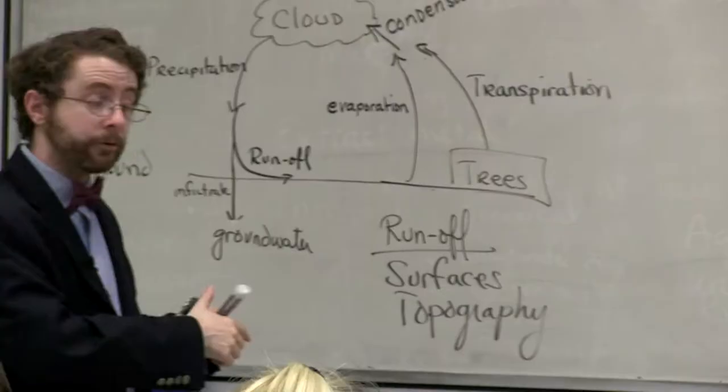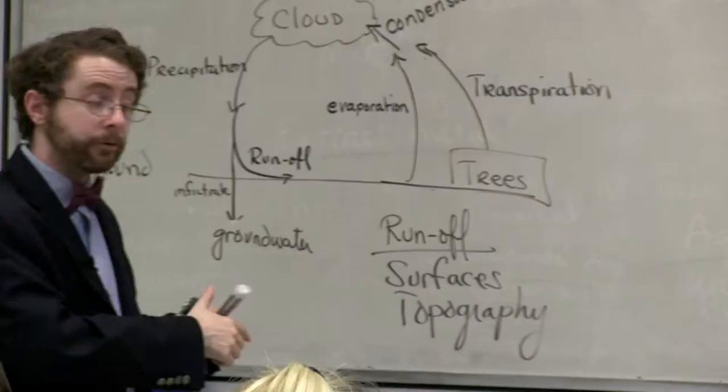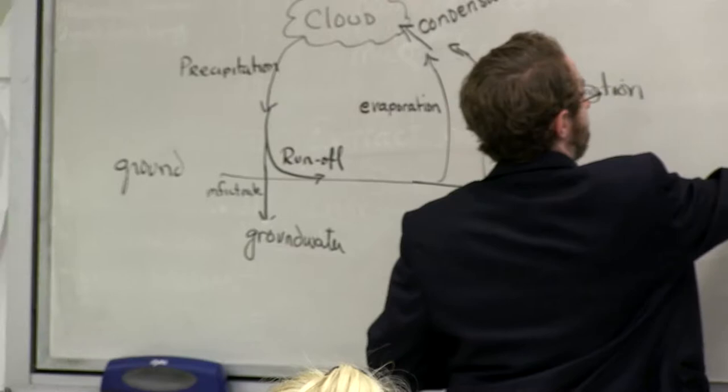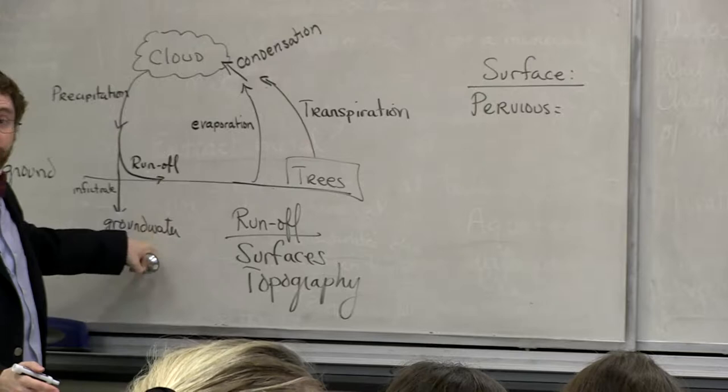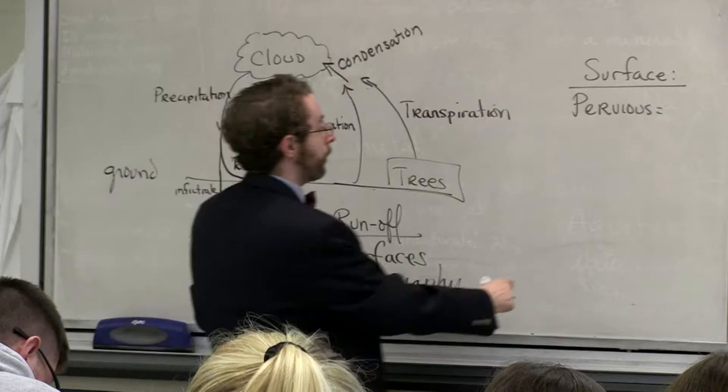There are two types of surfaces to consider. One type is known as pervious, and pervious means that it allows water to percolate in. So if you're going to generate groundwater, you need to have a pervious surface because that's going to allow water to infiltrate.